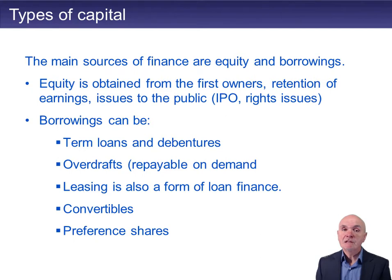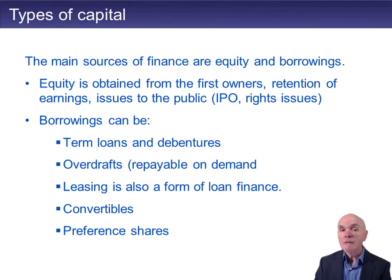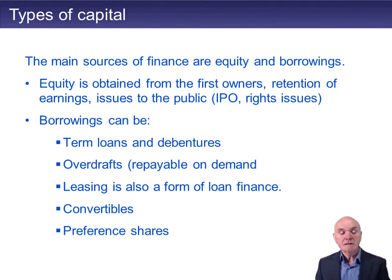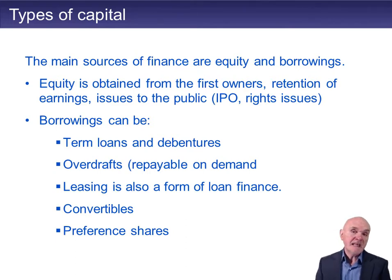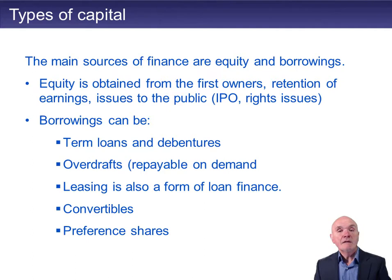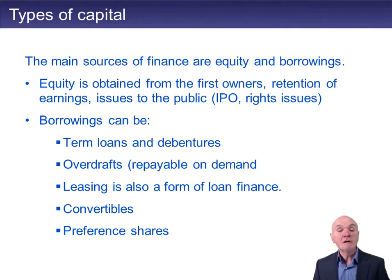You can have overdrafts, which can be repaid as fast as you like, but the bank can demand they're repaid immediately — so they're a little bit more risky in that sense. You can also lease assets, which is essentially a form of borrowing. The lessor buys the asset, and then you pay so much per month to use the asset.